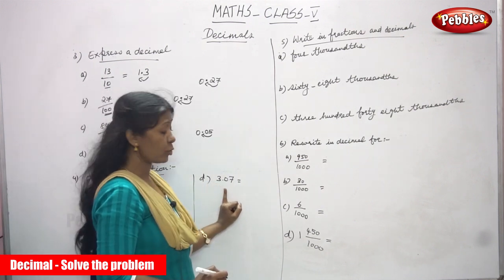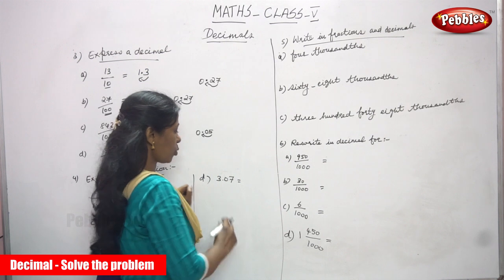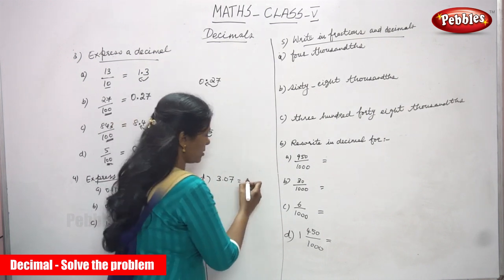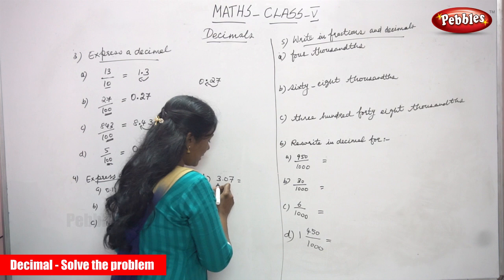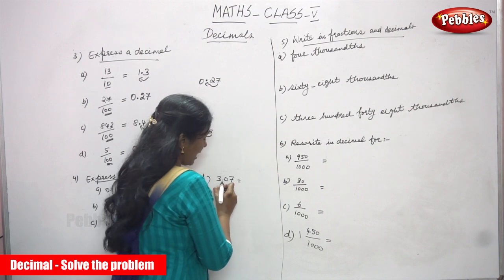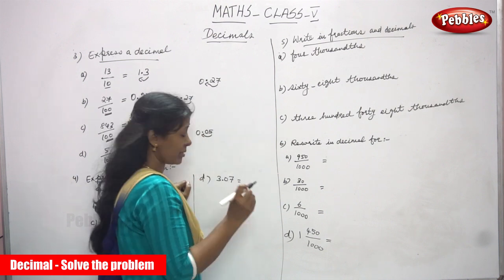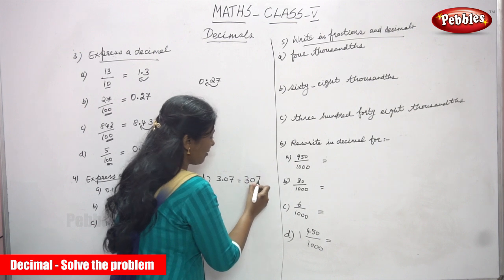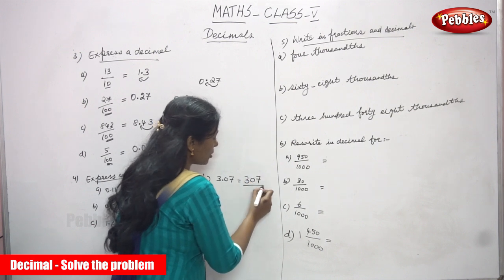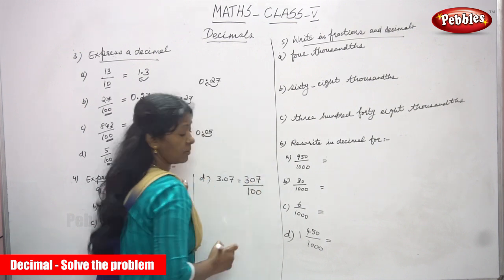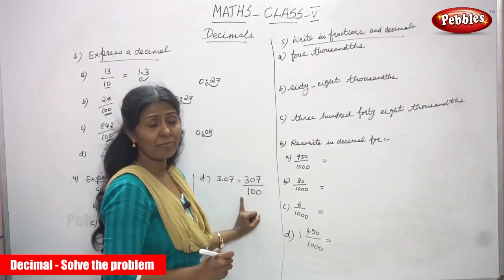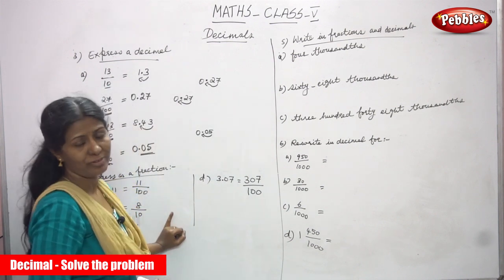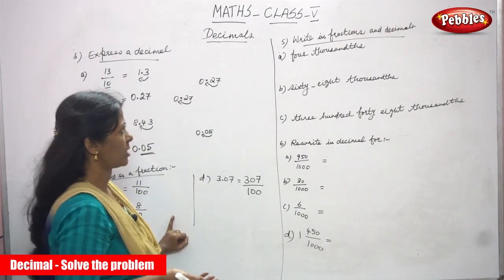For 1.6: after the point only 1 digit, so the fraction is 16 by 10. For 3.07: after the point there are 2 digits, so 2 digits means you write 100 as the denominator. The fraction is 307 by 100. So we convert decimals into fractions.